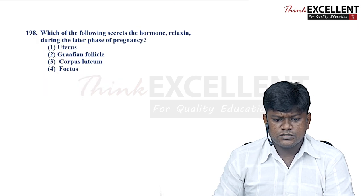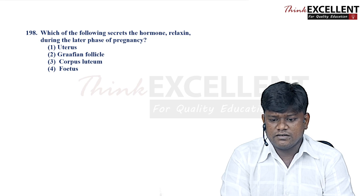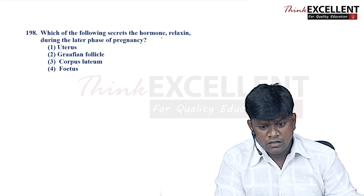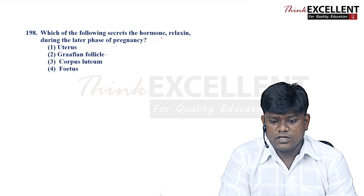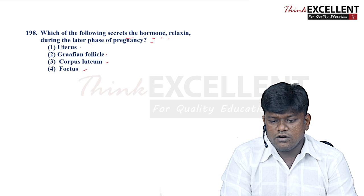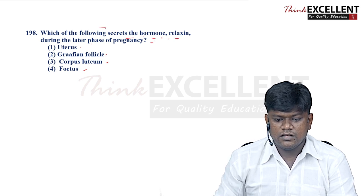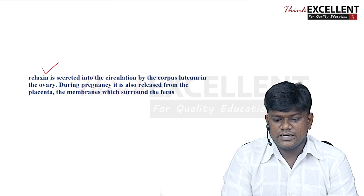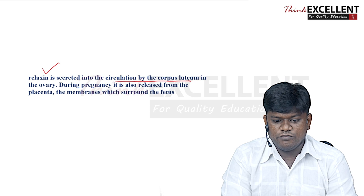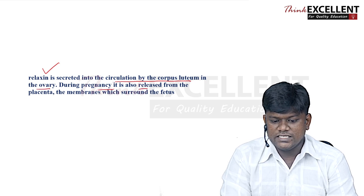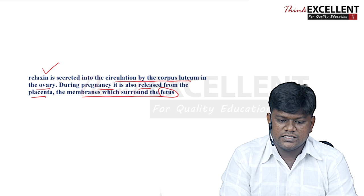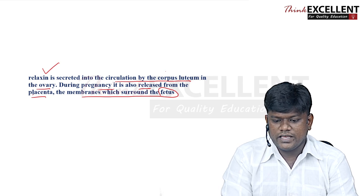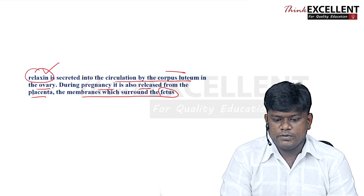Question 198: which follicle secretes the hormone relaxin during the later phase of pregnancy? Options are uterus, Graafian follicle, corpus luteum, and fetus. Relaxin is secreted by the corpus luteum of the ovary. During pregnancy it is also released from the placenta — the membranes surrounding the fetus. Option 3 — corpus luteum — is the right answer.